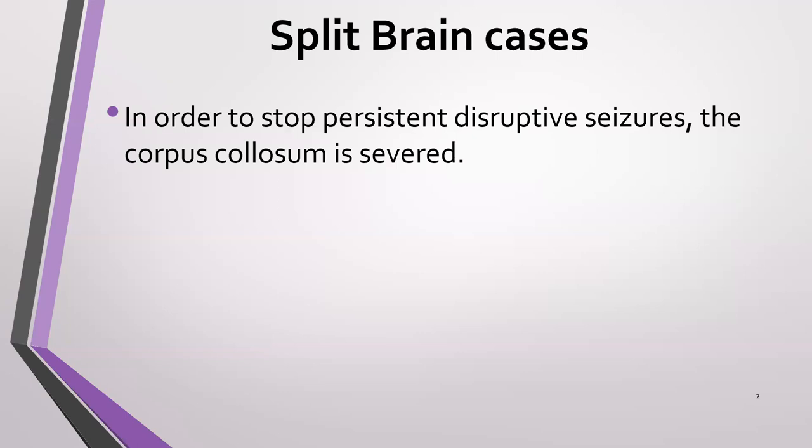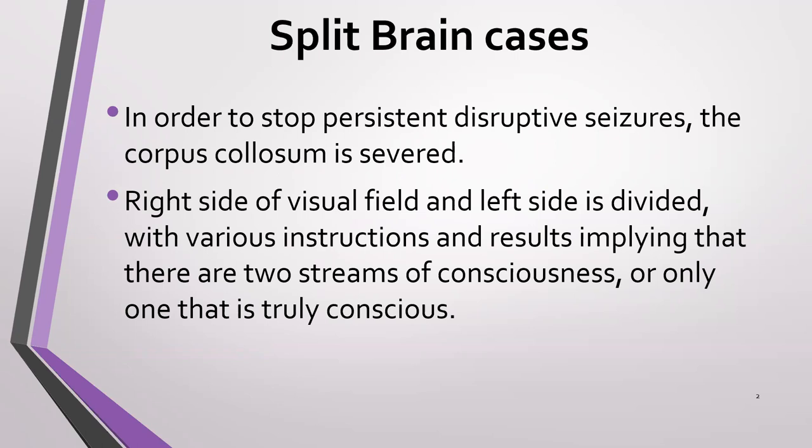What do we mean by split brain? In certain cases, in order to stop persistent and very disruptive seizures, there have been operations performed in which the brain is severed in two. The corpus callosum is severed, so you have this separation of the right and the left hemisphere of the brain. The right side of the visual field and the left side of the visual field is divided.